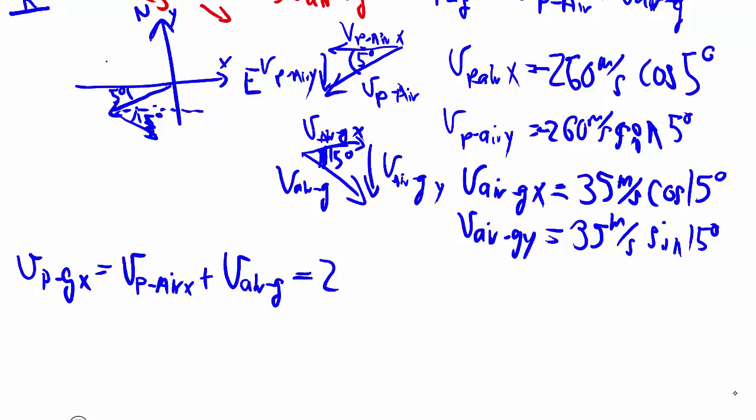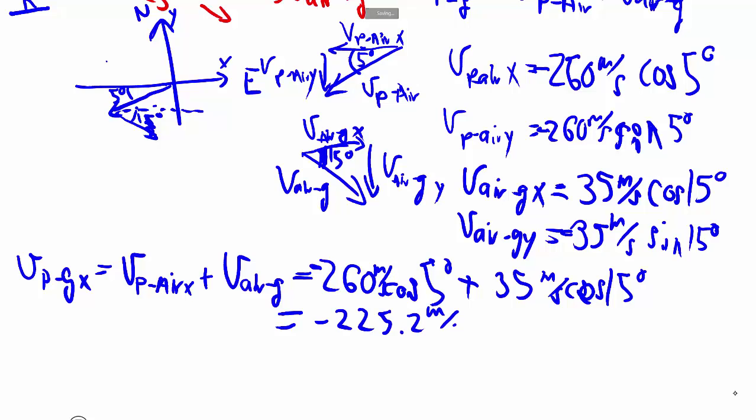So that's your 260 cosine 5 degrees meters per second, plus, oh negative, plus 35 meters per second cosine 15. Calculator, negative 225.2 meters per second.